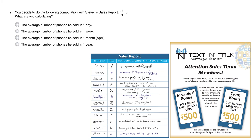You decide to do the following computation with Steven's sales report: 55 divided by 7. What are you calculating? Let's focus on Steven's sales — Steven is found here, refer to the chart.